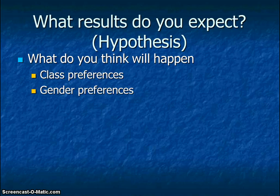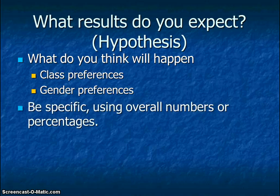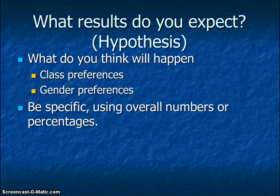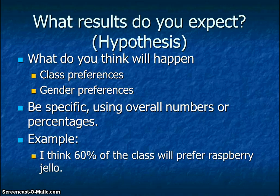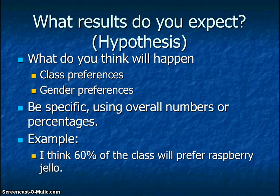So you want to pick what your answer is going to be based on the whole class as a group, or boys versus girls. And you want to be specific — either with a total number like 8 out of 20, or percentages like over 50% or 75%, which would be three quarters of the class. In my example of a specific hypothesis, I say that I think 60% of this class is going to prefer raspberry Jell-O. Go ahead and write your hypothesis now.